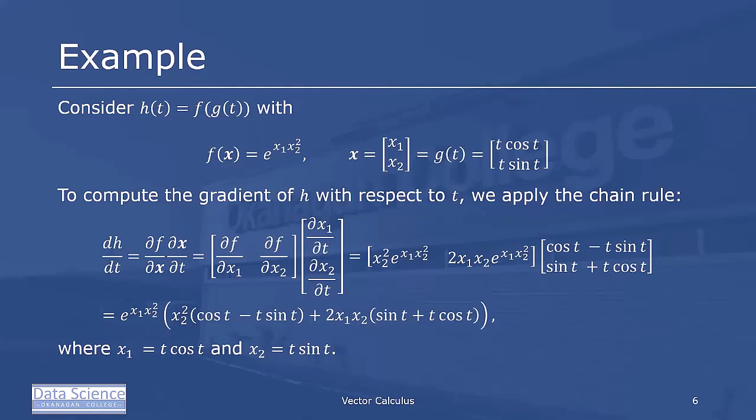And so here we end up with the row matrix df dx1 df dx2 times the column vector dx1 dt dx2 dt.